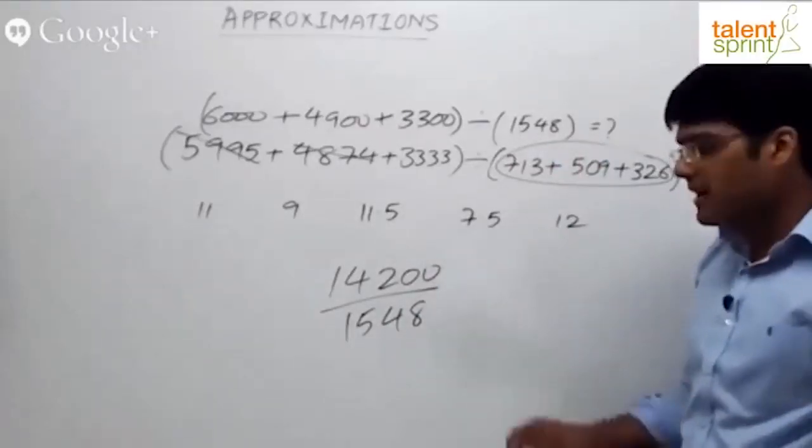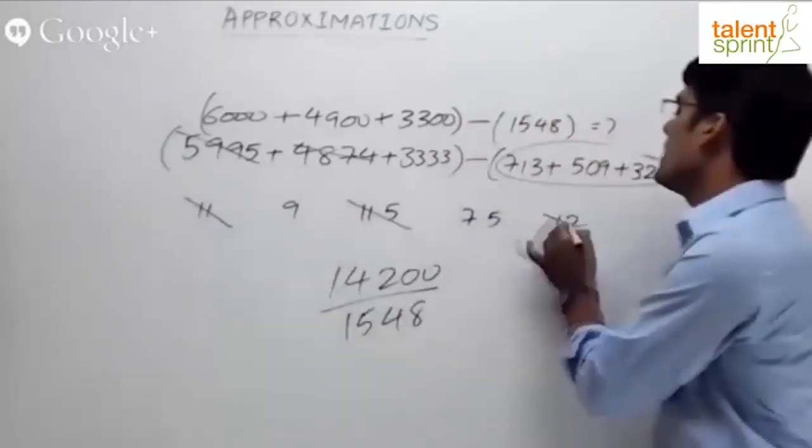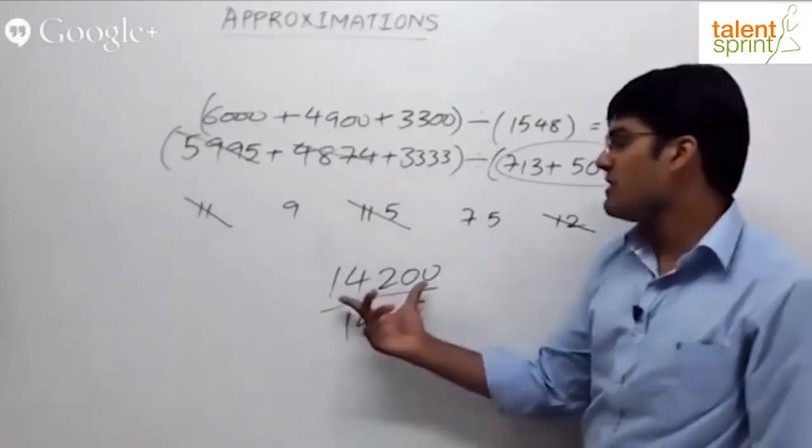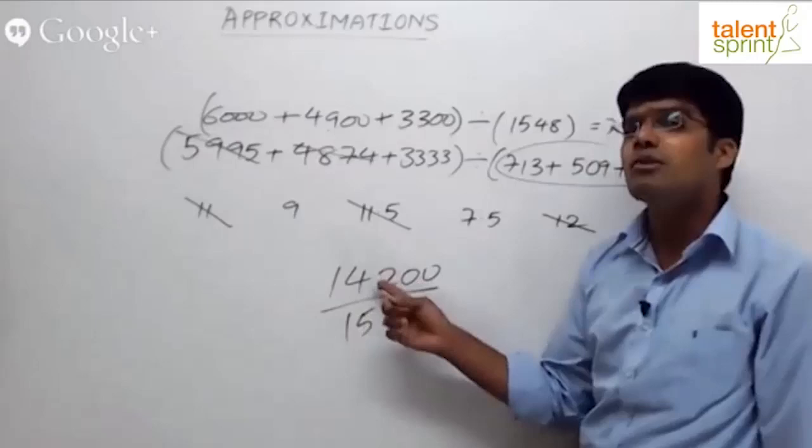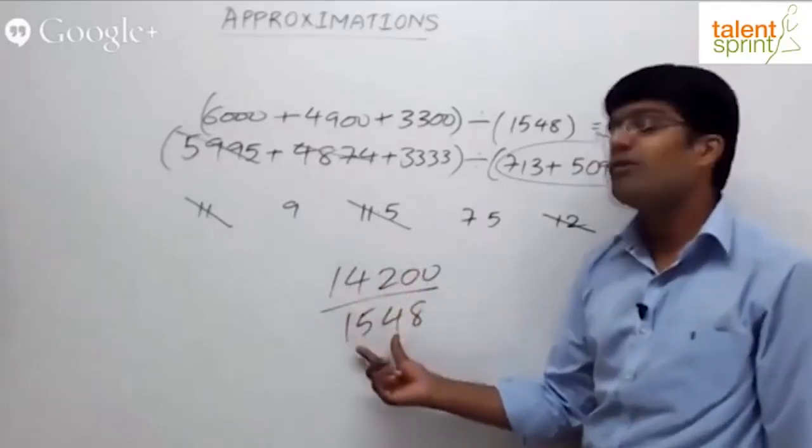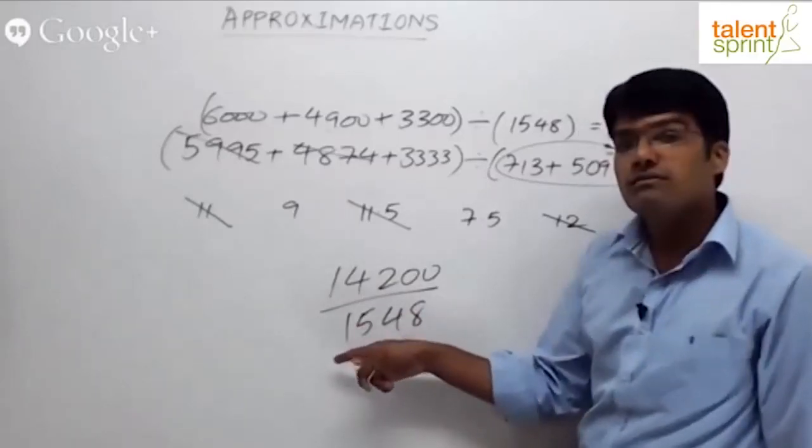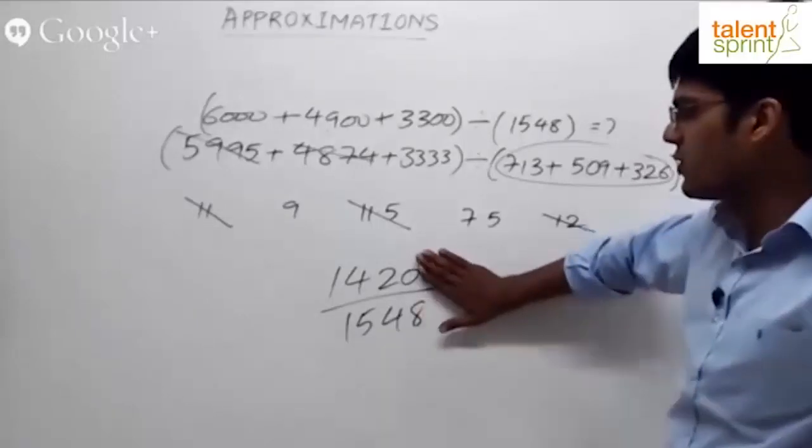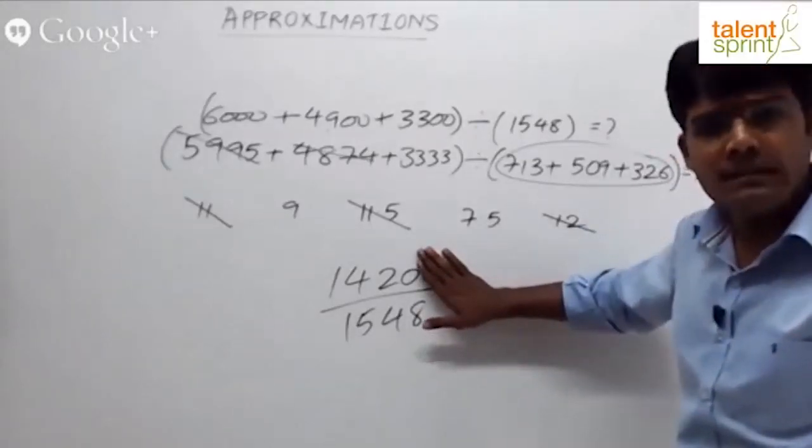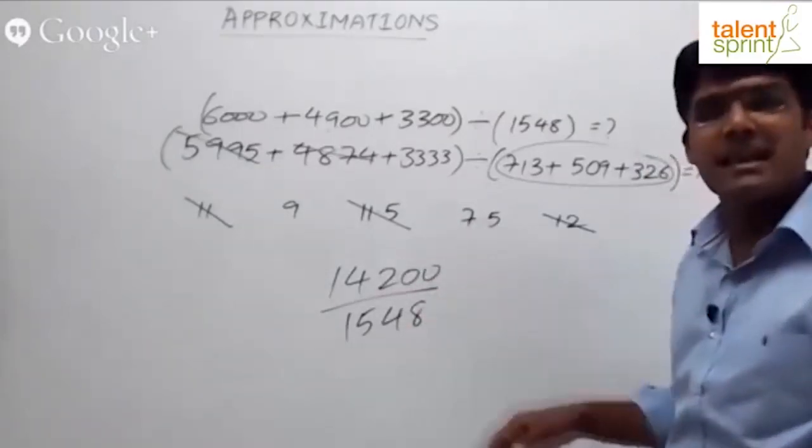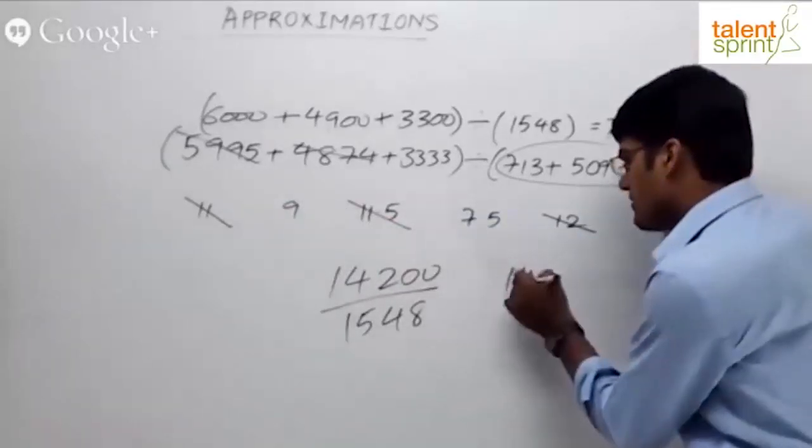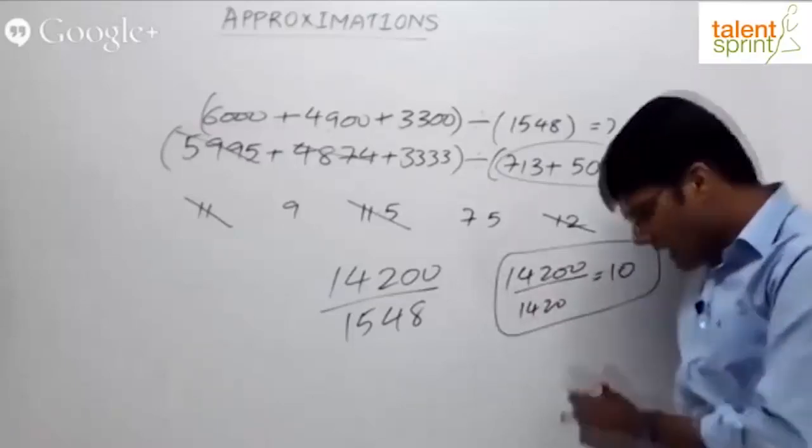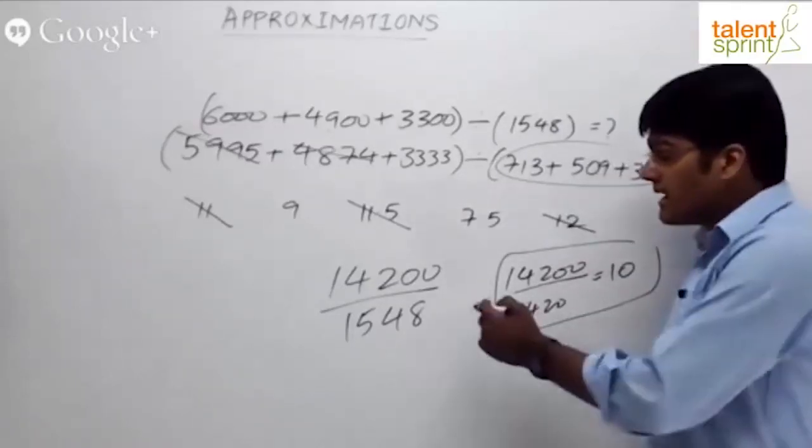Now we are not far away from the exact answer. The moment you see this, 14,200 divided by 1548, you will know that the first, third, and fifth options should not be the answer. Let me tell you why. 14,200 divided by 1420, if the denominator is 1420, it will be equal to 10. 14,200 divided by 1420 will be equal to 10. Actual denominator is more. When the denominator is more, value will be less. That means answer should be less than 10. So 11, 11.5, and 12 get cancelled.